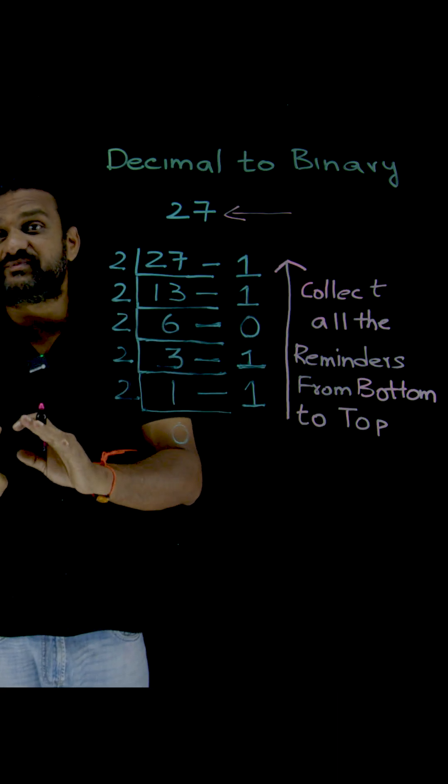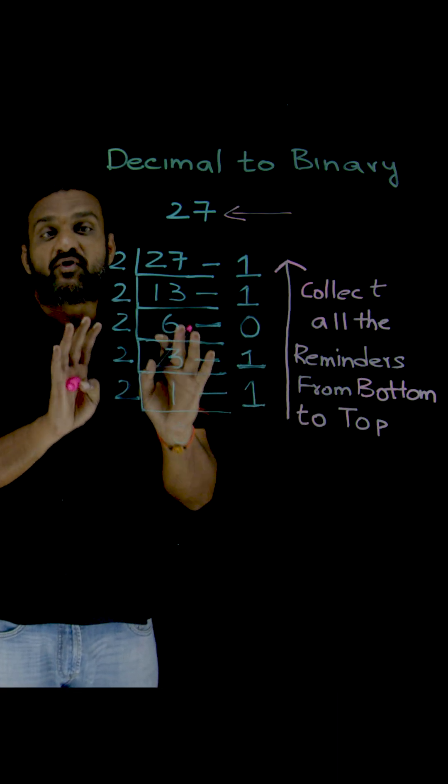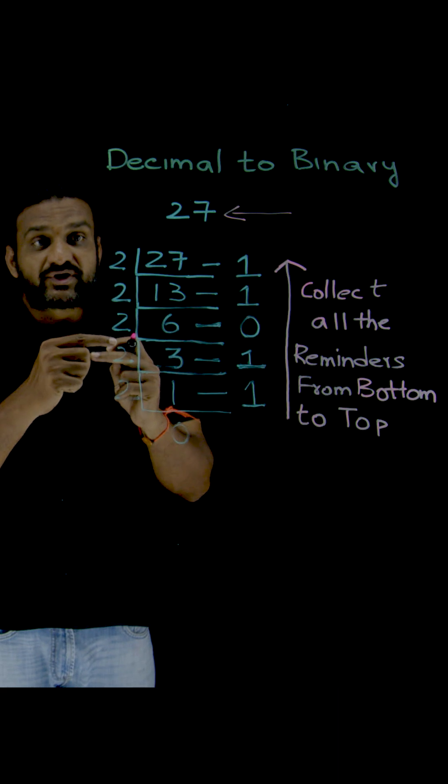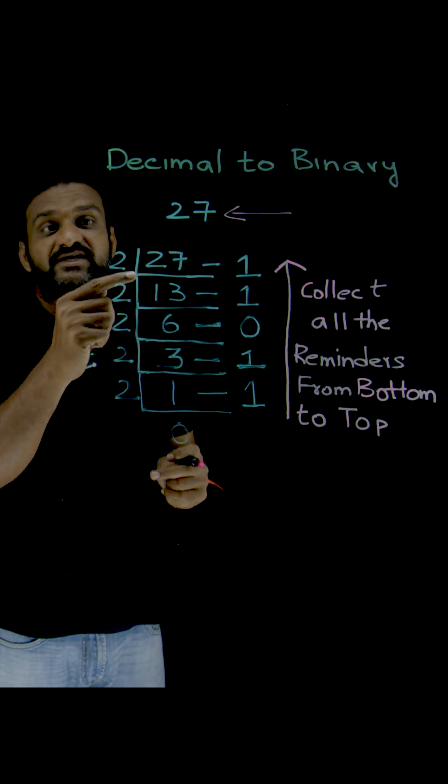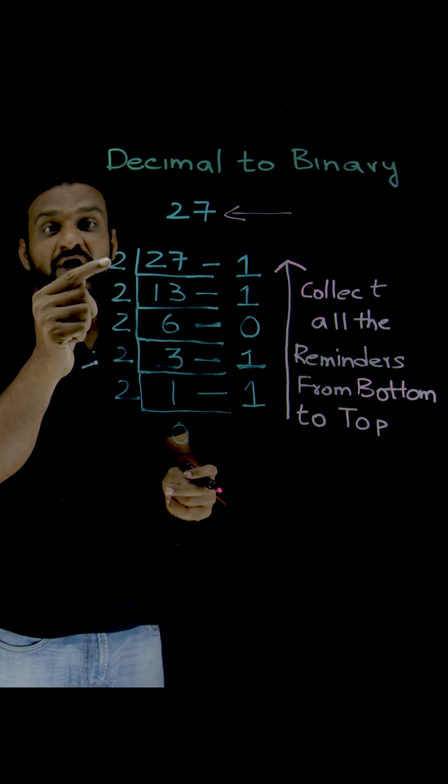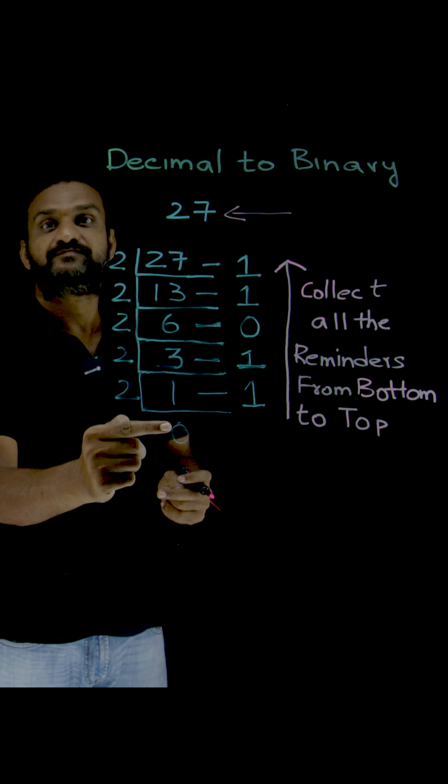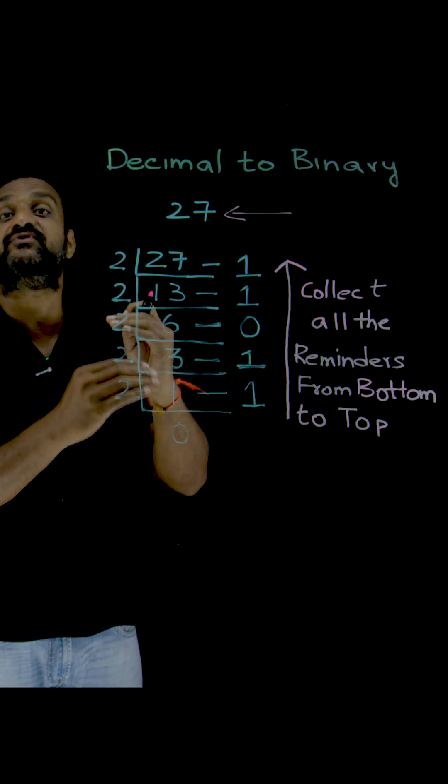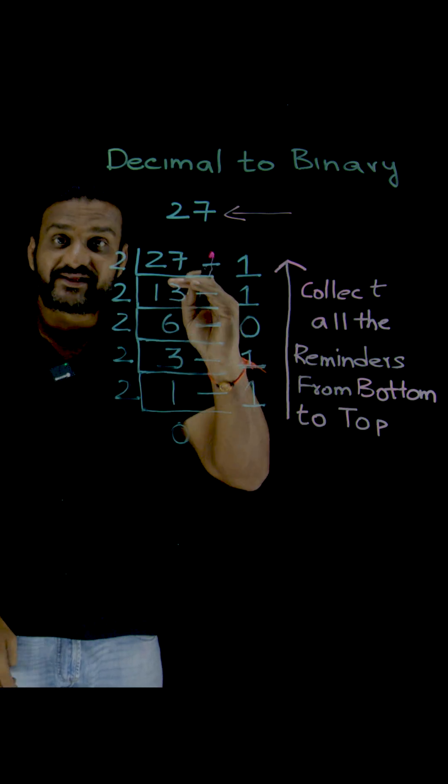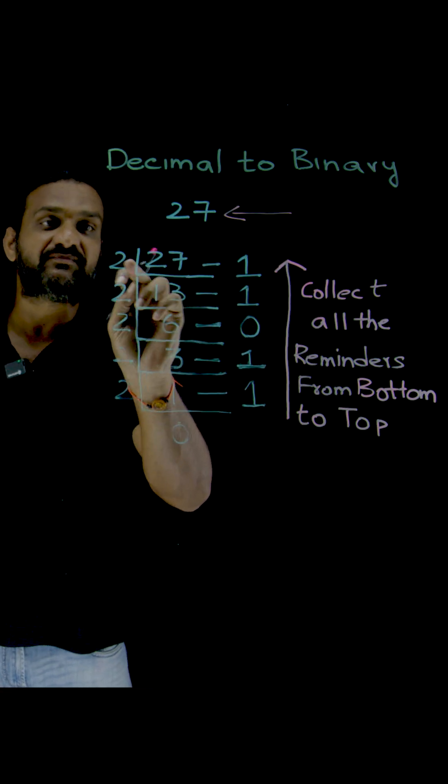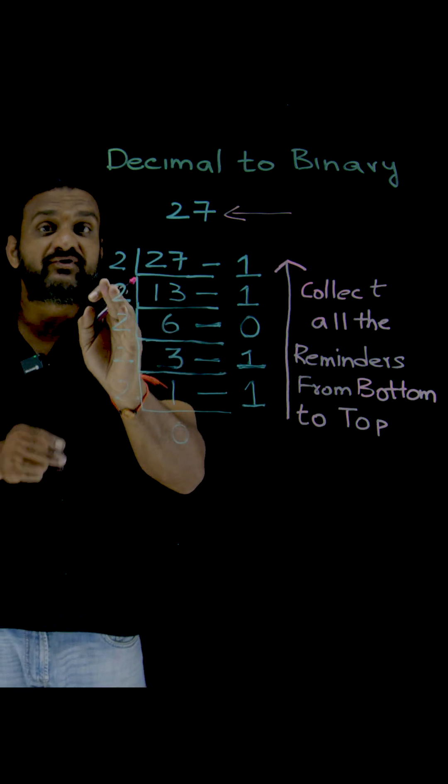In order to convert a decimal number into binary, what we have to do is repeatedly divide the given number by 2 until you get 0, until that number cannot be further divided. Until that point we have to divide the given number by 2.